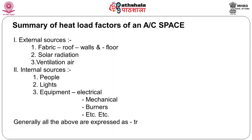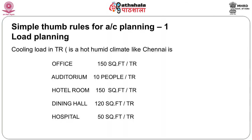In summary, a heat load is a factor of two important things — external and internal. External is made up of three elements: fabric, solar, and ventilation. Internal is likewise made up of three elements: people, lights, and equipment. Generally, all of the above are calculated and expressed as TR — tons of refrigeration — as we saw at the outset.